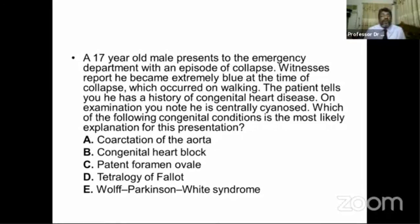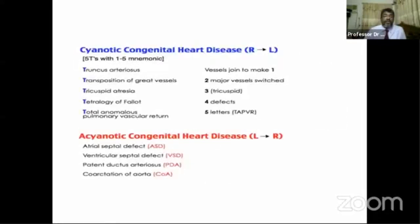There are some causes of congenital cyanotic heart disease. When there is a right-to-left shunt within or outside the heart, cyanosis develops. The five causes of cyanotic congenital heart disease are: truncus arteriosus, transposition of the great vessels, tricuspid atresia, tetralogy of Fallot, and total anomalous pulmonary venous drainage.